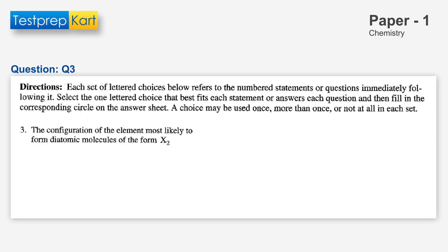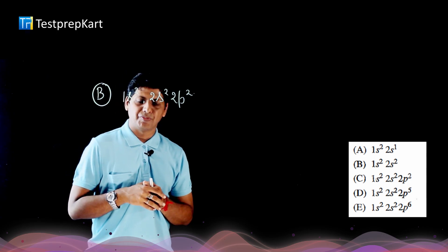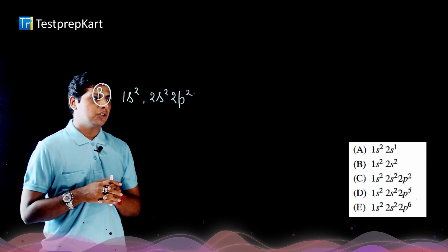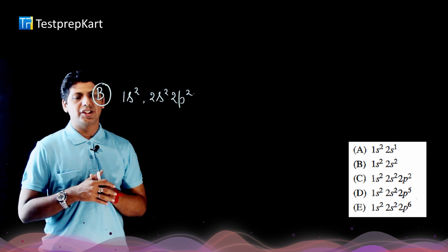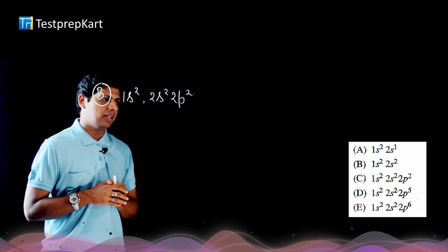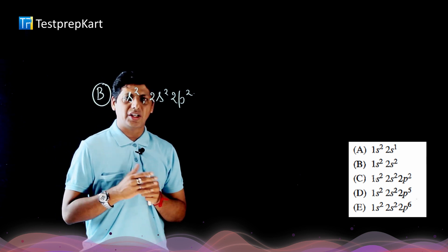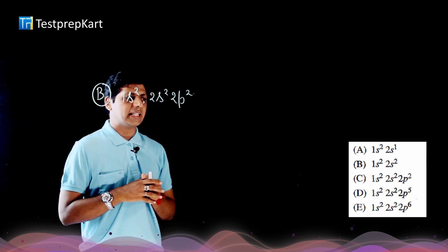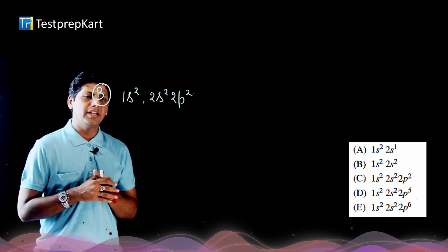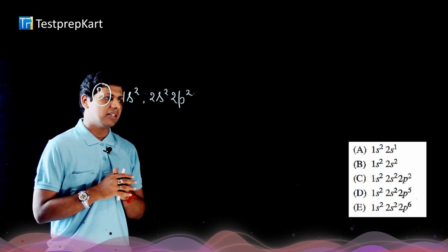Question 3 asks for the configuration of the element most likely to form diatomic molecules (X₂). Diatomic molecules are formed by nonmetals, so we need to identify the nonmetal from the configurations. The first configuration is lithium and the second, 1s²2s², is beryllium — both are metals.